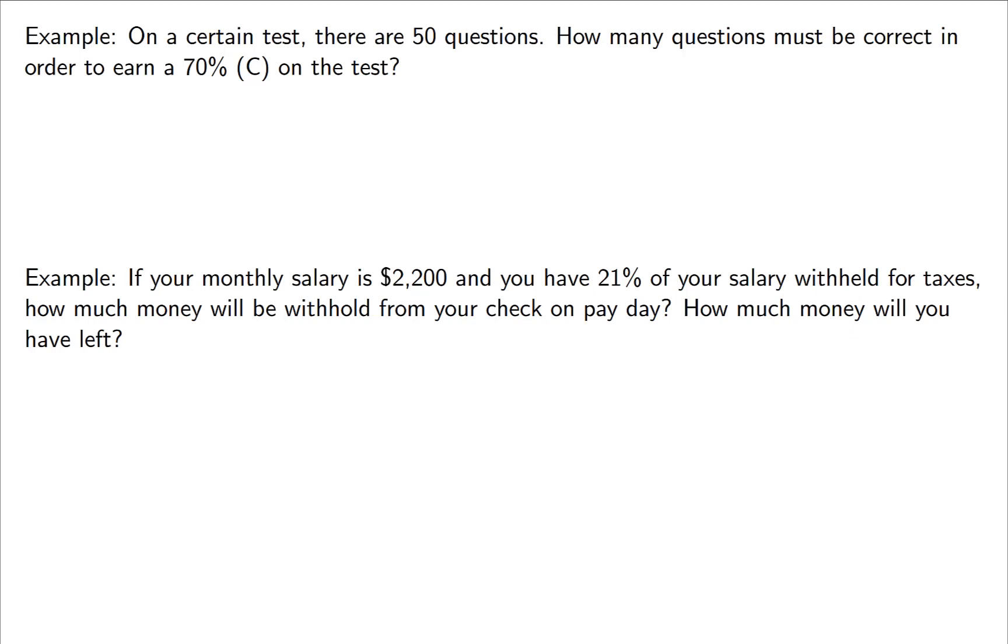On a certain test, there are 50 questions. How many questions must be correct in order to earn a 70% on the test? We're looking for a C on a 50 question test. There's a few strategies you could use to figure this out, but let's use the pw equals a formula. p is your percentage, so p would be 0.7. Remember, write your percentage in decimal form. w is the whole. The whole in this case is the number of questions on the test. If you were to get all 50 right, you'd get the 100, but we're not worried about 100, we're worried about a 70. So the whole is the 50 questions. And the amount that we're seeking is the unknown. This is your x.